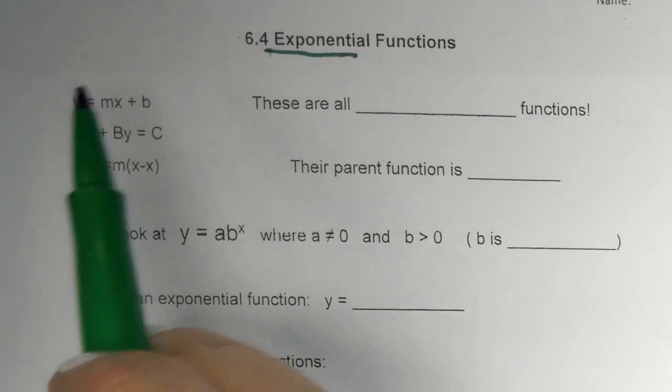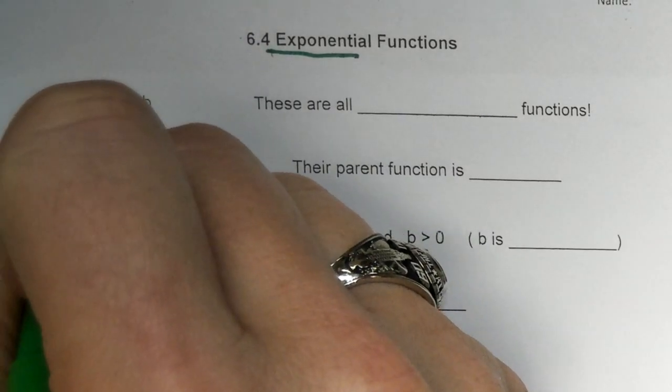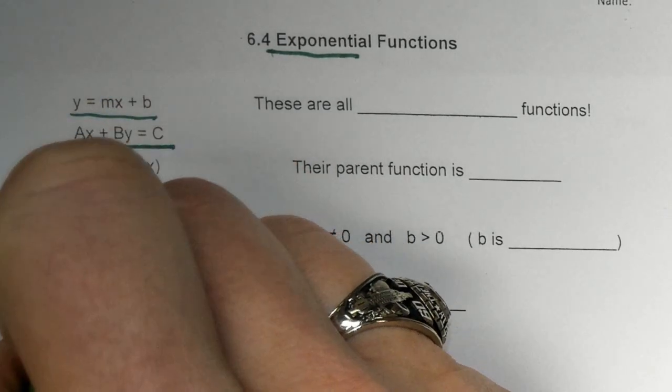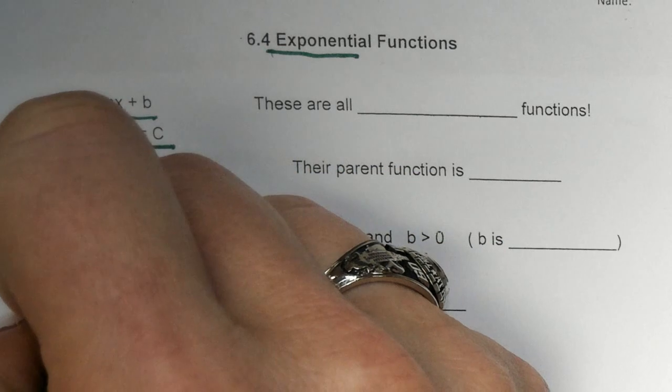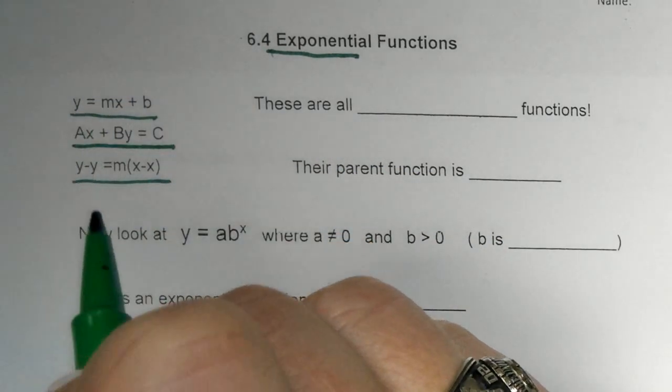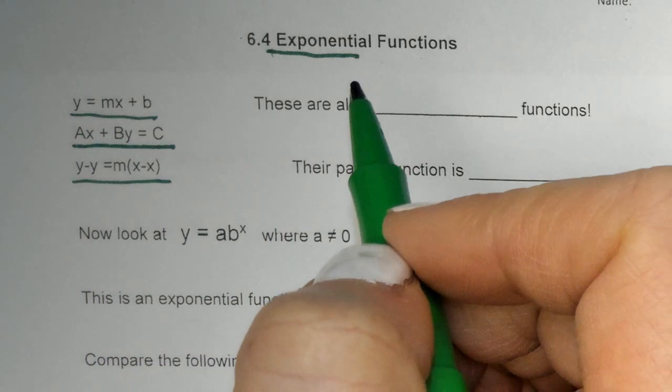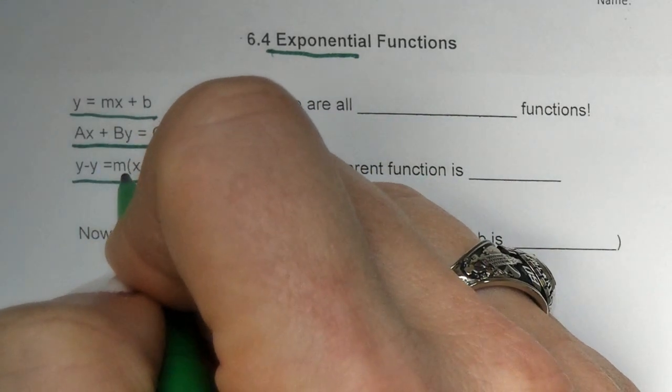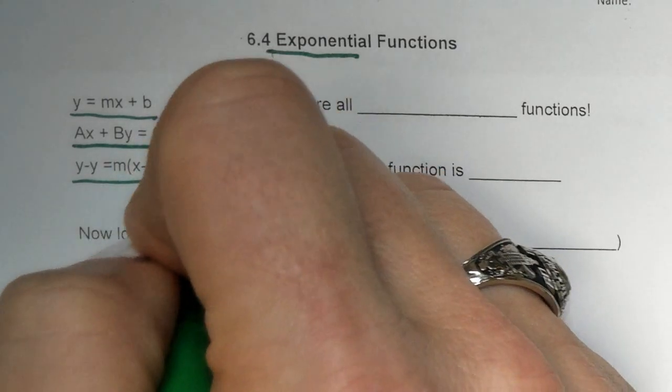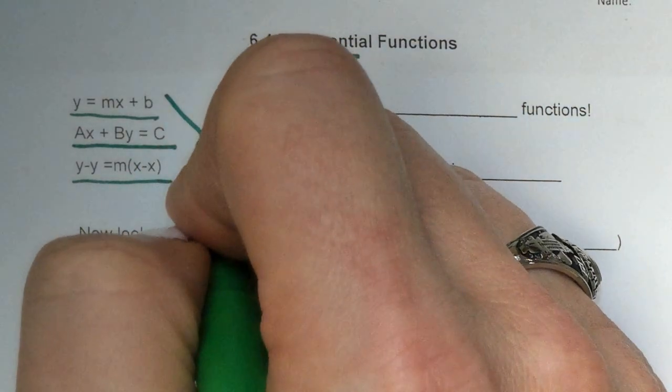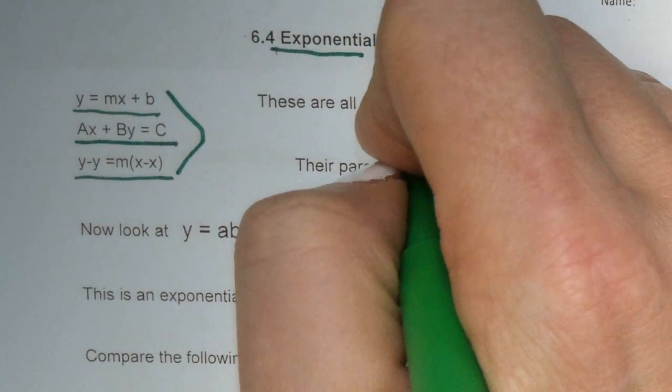So these are some things that we've done in the past. We've talked about a lot. Y equals mx plus b. I don't know if you remember this. Ax plus By equals C. This is a point slope formula, which we didn't use that much in our class, but we used a different way to find. It was a way to find the b in Y equals mx plus b.